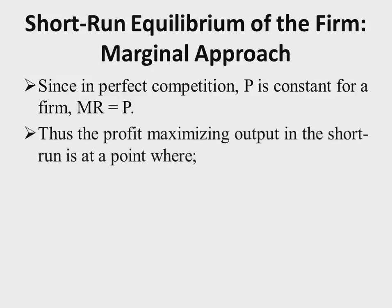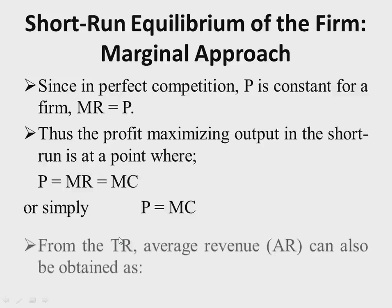The profit-maximizing output in the short run is at a point where price equals marginal revenue equals marginal cost. Since under perfect competition price equals marginal revenue, the profit-maximizing rule can be generalized to: price = marginal revenue = marginal cost, or simply, price equals marginal cost.